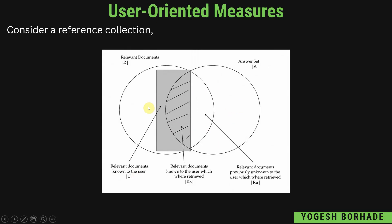यहाँ पे जो reference collection है उसमें दो sets हैं। First set है relevant documents का जिसको हम denote करते हैं mod of capital R से, और second set है answer set जिसको हम denote करते हैं mod of capital A से। उसके बाद जो rectangular shape दिख रहा है वो denote कर रहा है relevant documents known to the user, denoted by capital U — यह relevant documents का set है जो user को already पता है। और जो white part है वो denote कर रहा है relevant documents previously unknown to the user which were retrieved, denoted by R(u)।